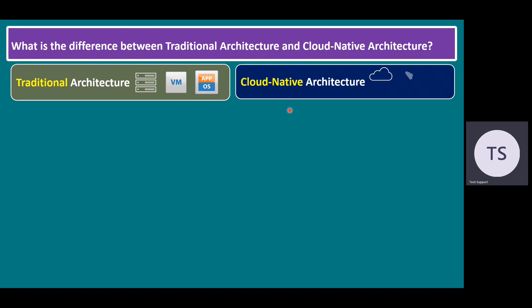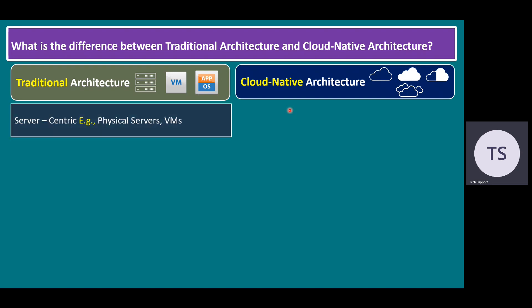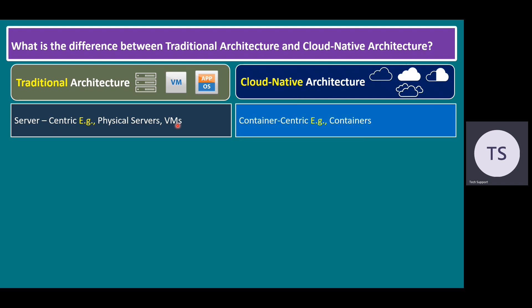We have a private cloud, public cloud, and if you mix private and public, hybrid cloud, or some organizations have a multi-cloud. This is common in cloud-native architecture. When it comes to traditional architecture, most are related to server-centric only — for example, physical servers and virtual machines. But when it comes to cloud-native architecture, it's not about server-centric; it's specifically container-centric, and all are running as containers only.